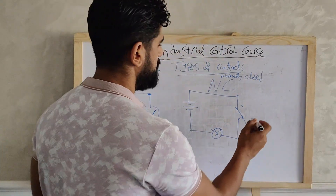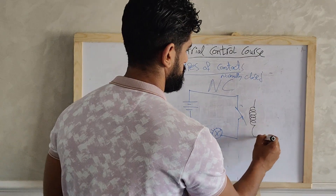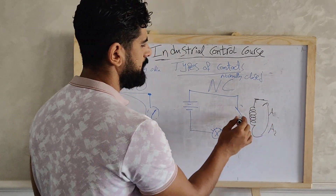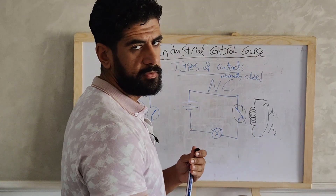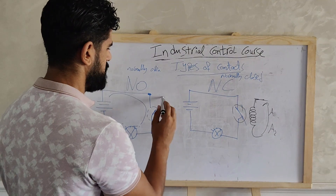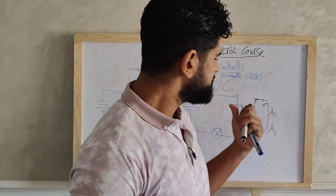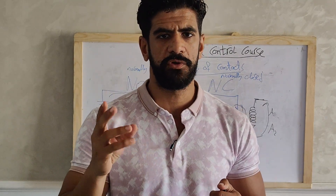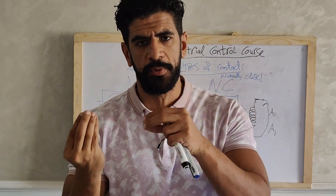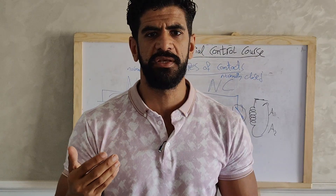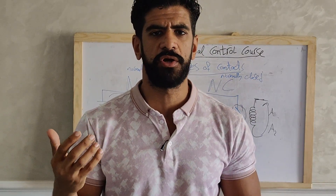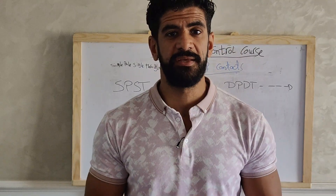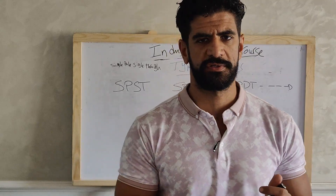Sometimes we use an electric relay. An electric relay has a coil, and when we apply a voltage to the coil it will cause a normally open contact to close, or cause a normally closed contact to open. The action applied to a contact depends on what type of electric device is used. In other videos we will see other types of electric devices that have normally open and normally closed contacts.